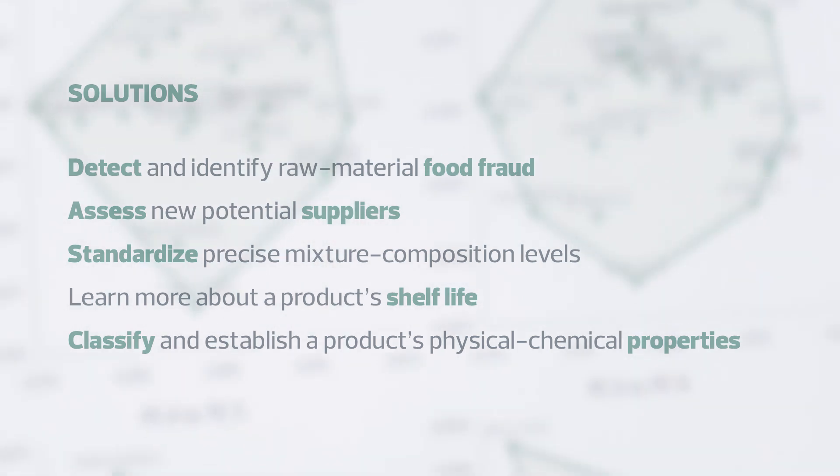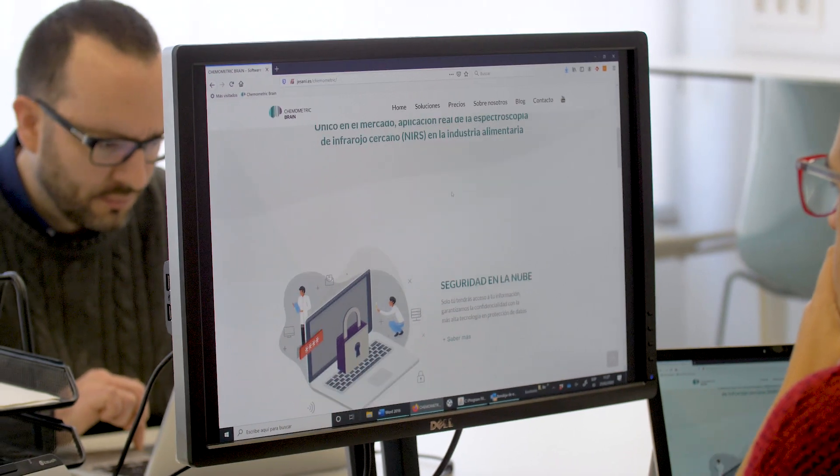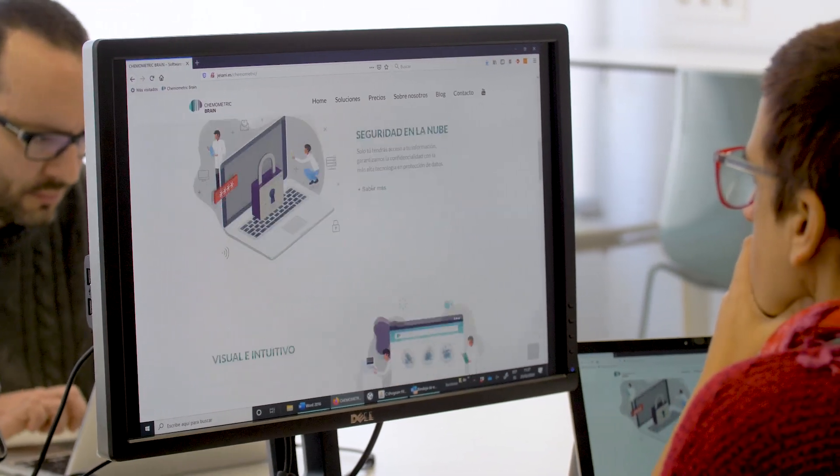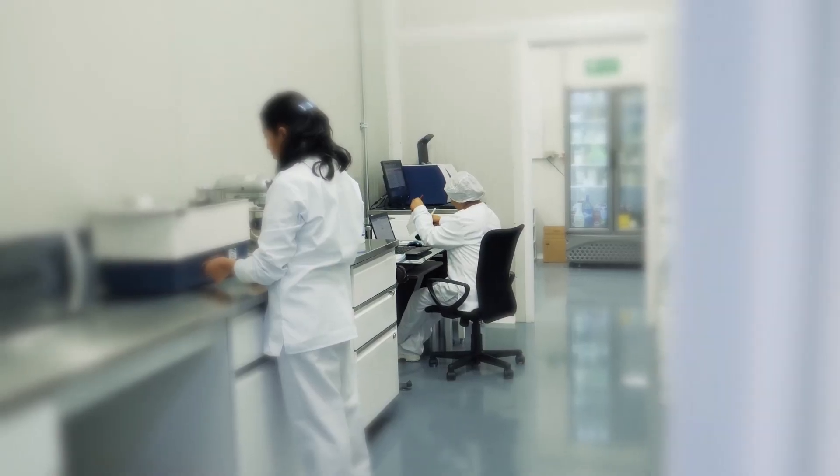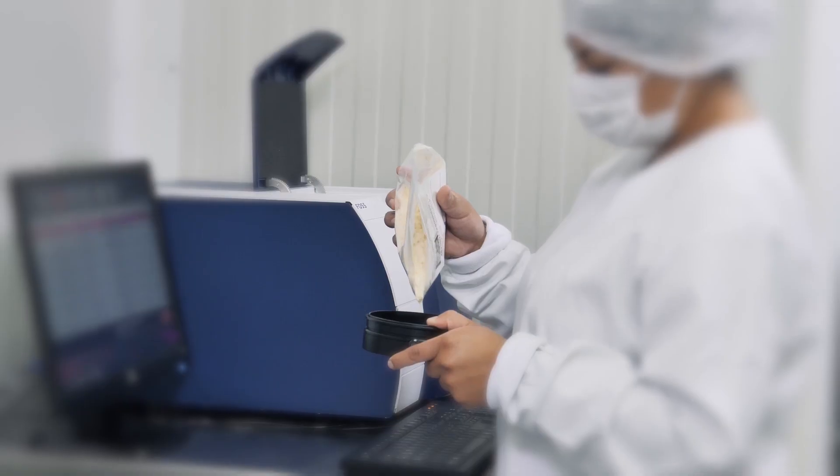As cloud-based software, it's available 24-7 and from any location around the world. As such, with Chemometric Brain, you can include all your workstations, however remote, and all data will be held in a highly secure environment with unrivaled data protection technology.